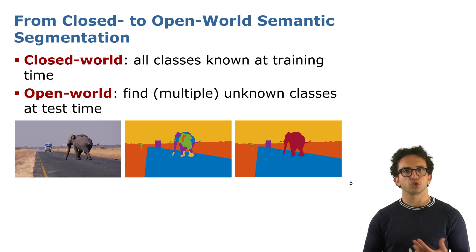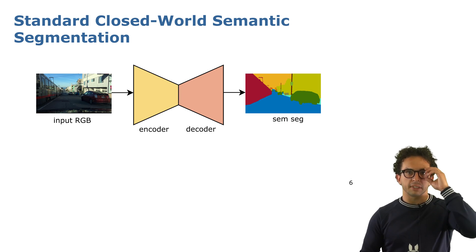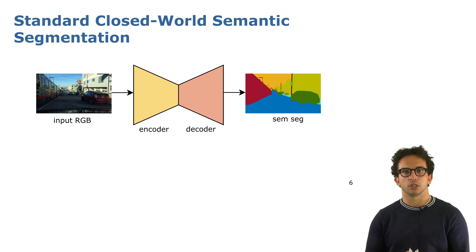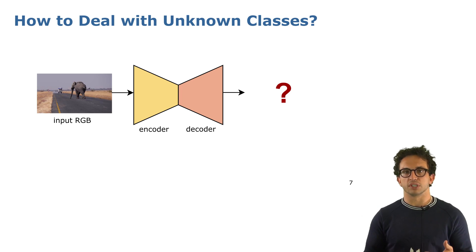From an approach point of view, standard closed-world semantic segmentation approaches rely on a convolutional neural network with an encoder-decoder architecture. The input is the RGB image we want to segment, the output is the actual semantic segmentation. But how to adapt this to open-world semantic segmentation?